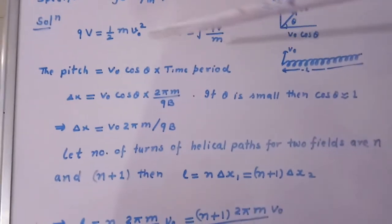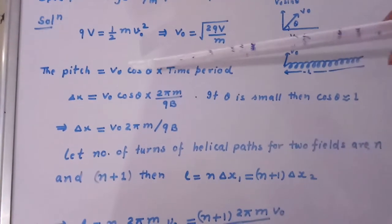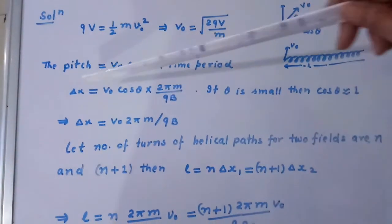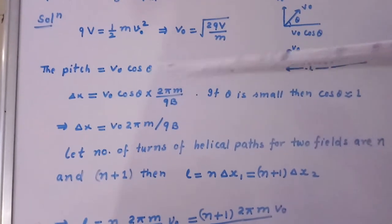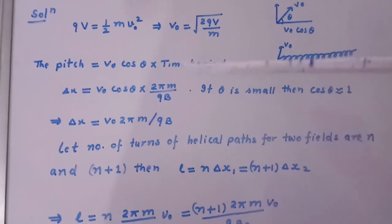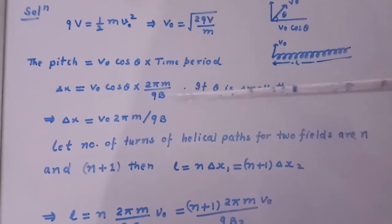Now we know that pitch equal to horizontal component of the velocity V0 cos theta multiplied by time period. So we write it as delta X equal to V0 cos theta times 2 pi M divided by QB because time period of circular path will be 2 pi M upon QB.